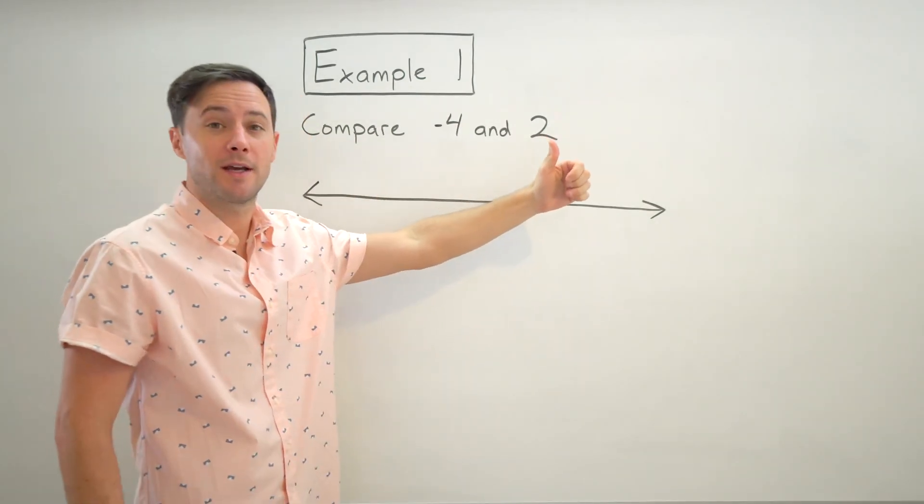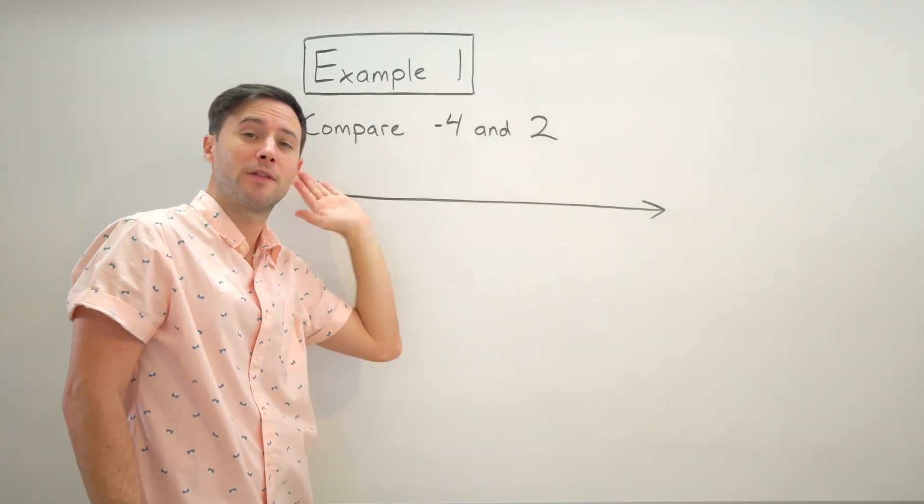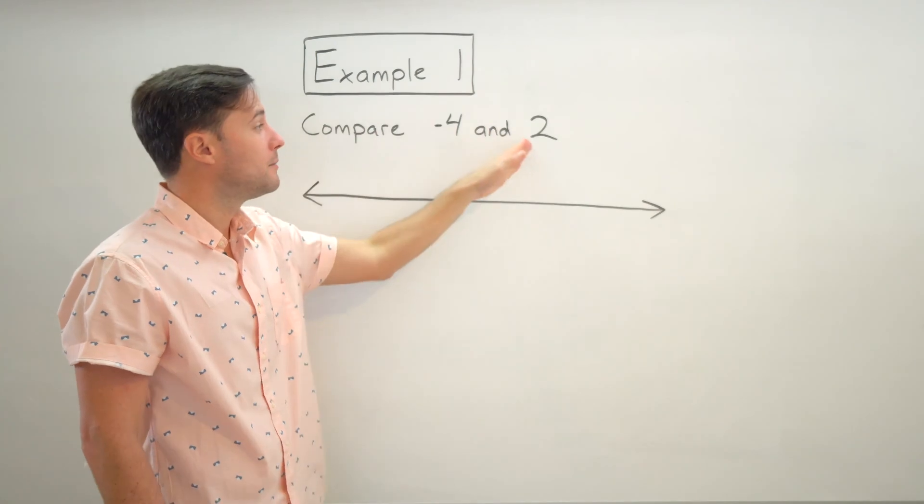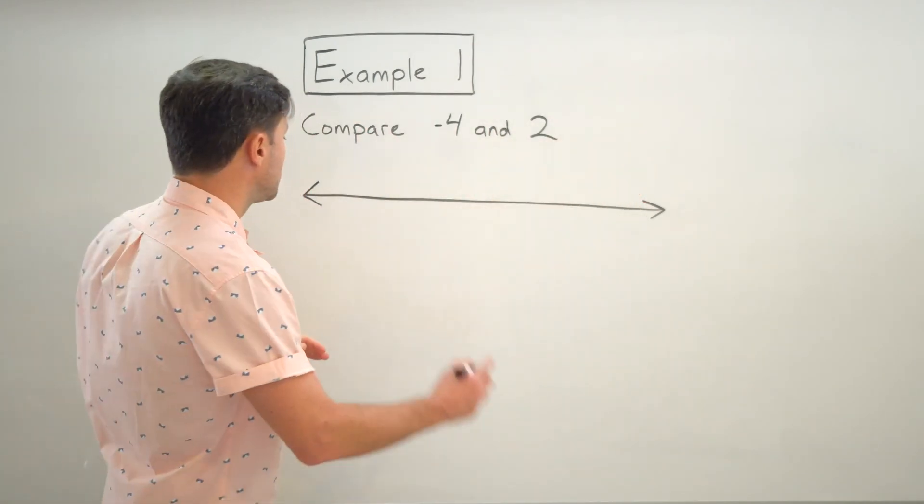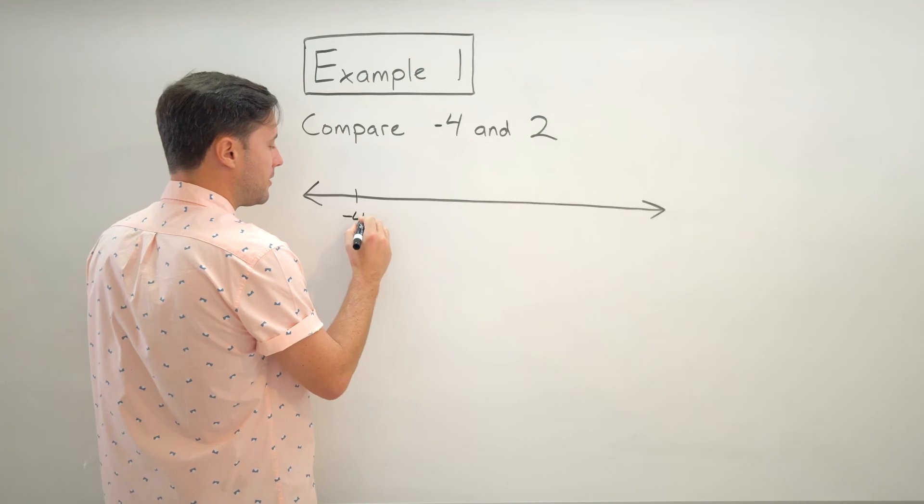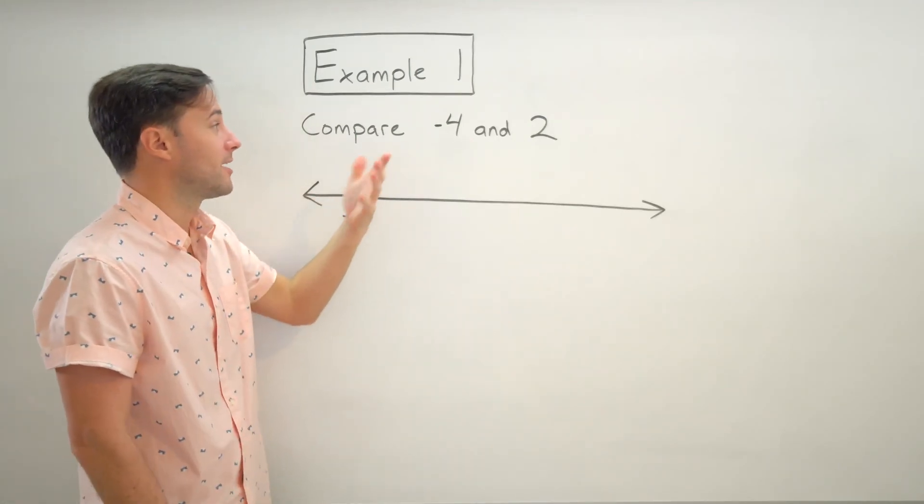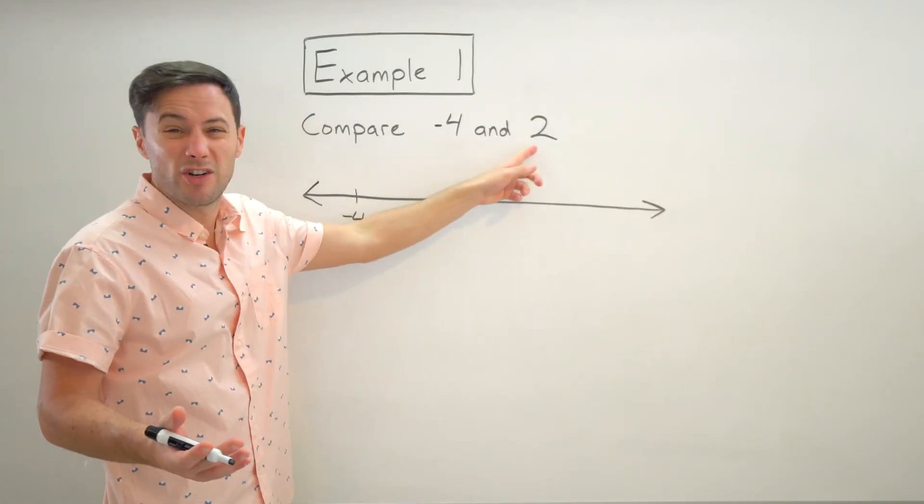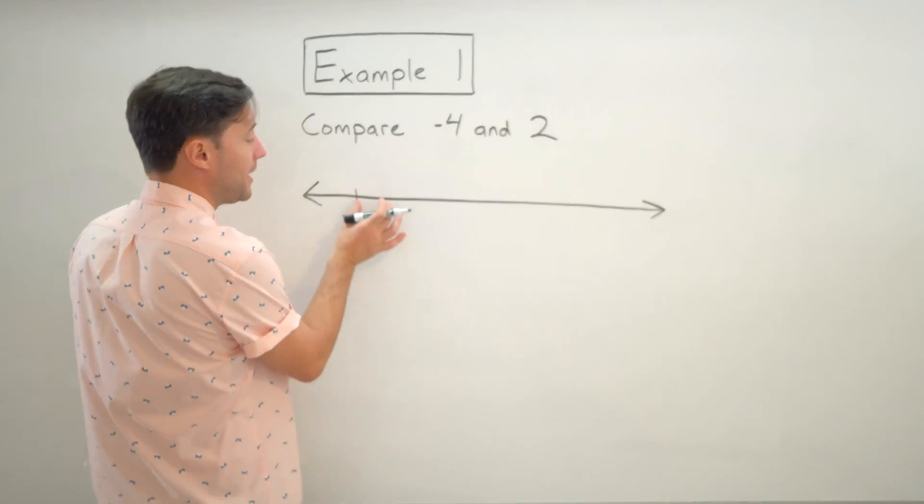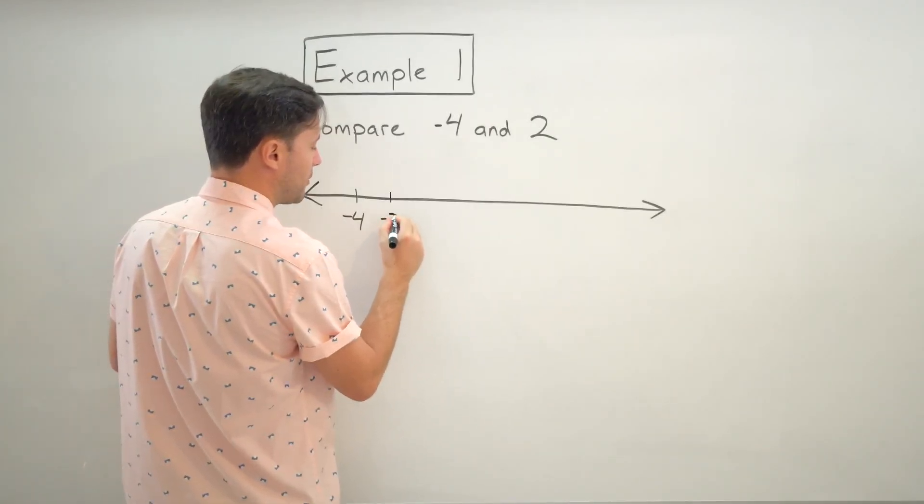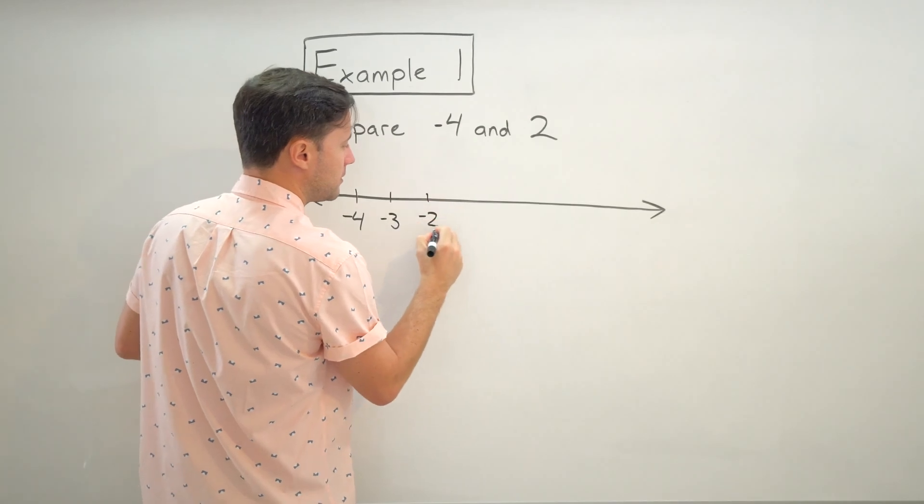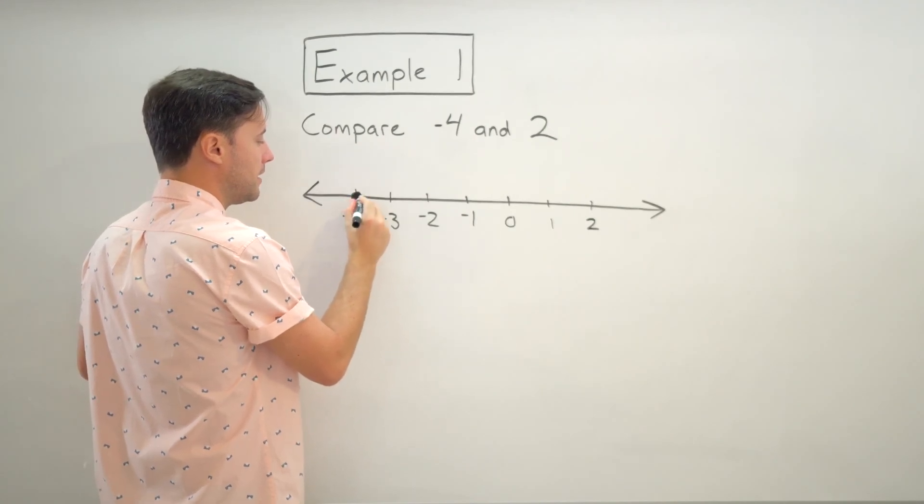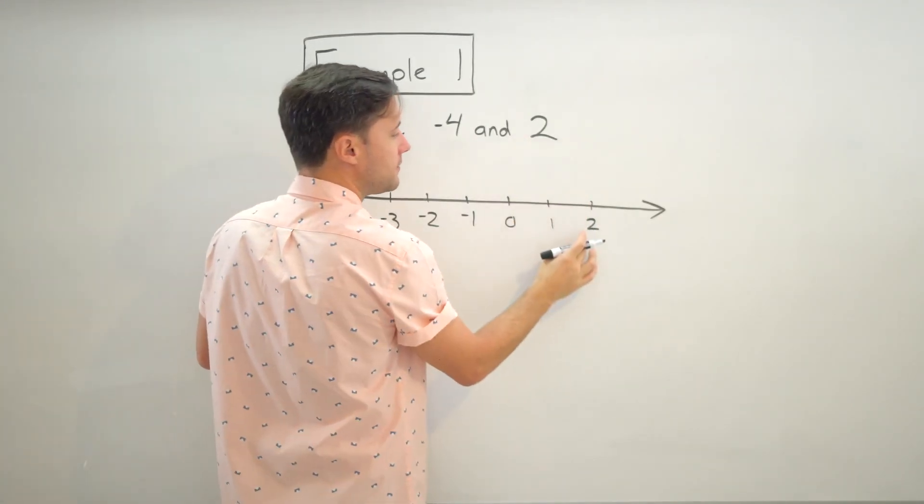I know negative four is going to be left of negative two on the number line because it's negative. Right? The negative integers are to the left of zero, positive are to the right. So I'm going to start with negative four down here. I don't need to go any less than that because I don't need to compare a number less than negative four. And then I'm just going to, because I only have to go to two, I'm just going to count by ones, making sure that my spacing is consistent. So that would be negative three, negative two, and that would be two. So negative four would be here and positive two would be here.